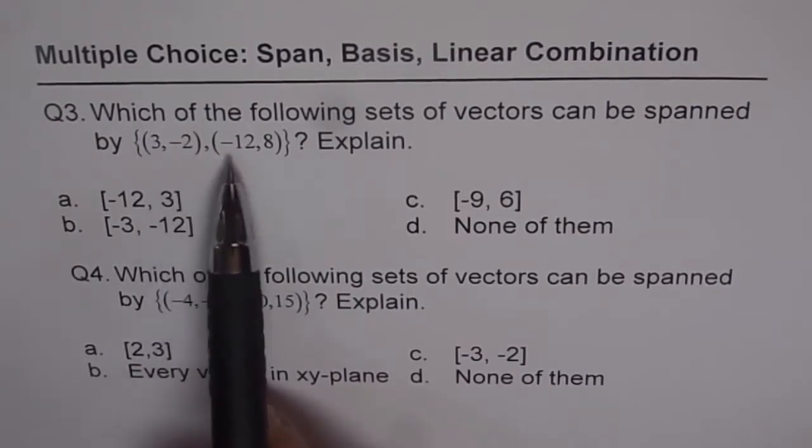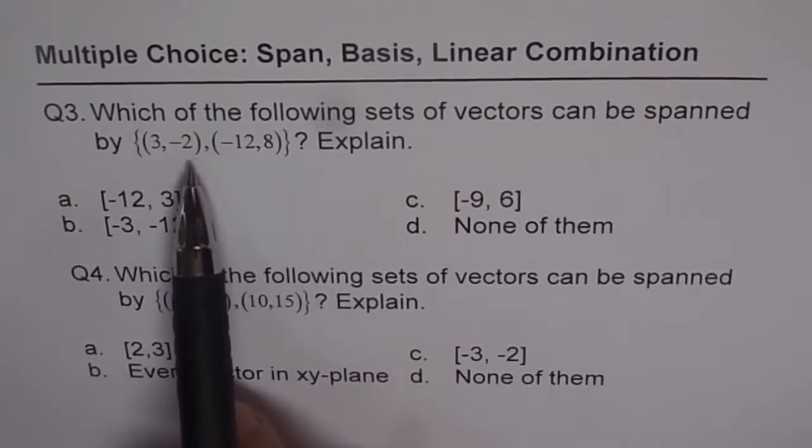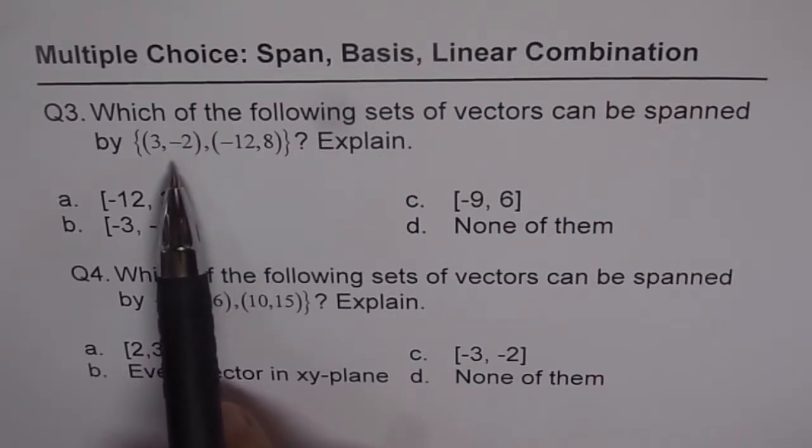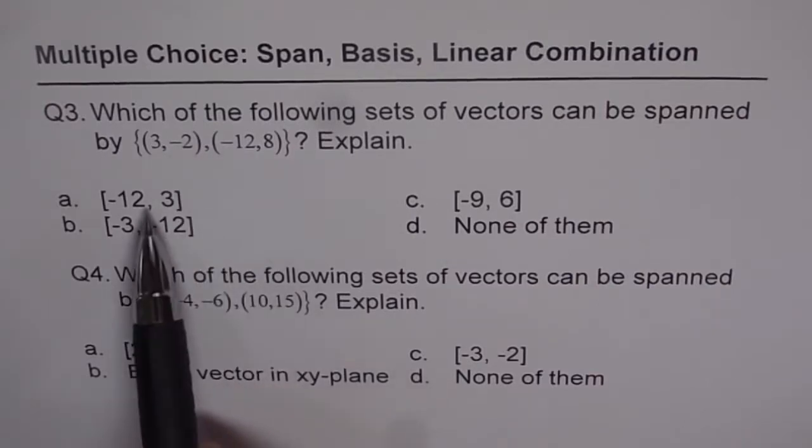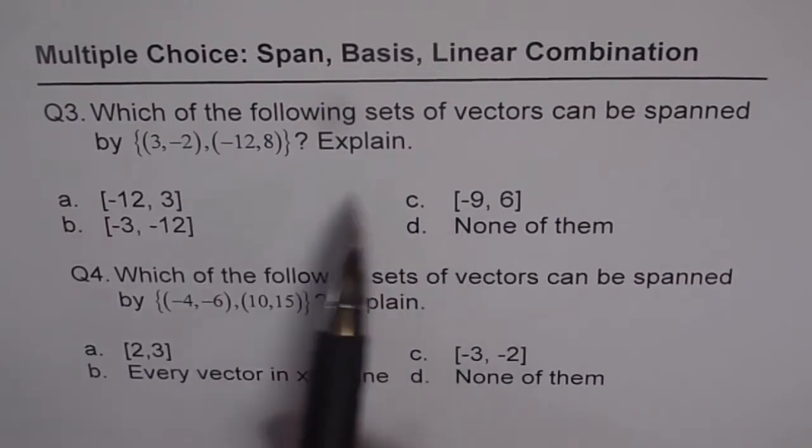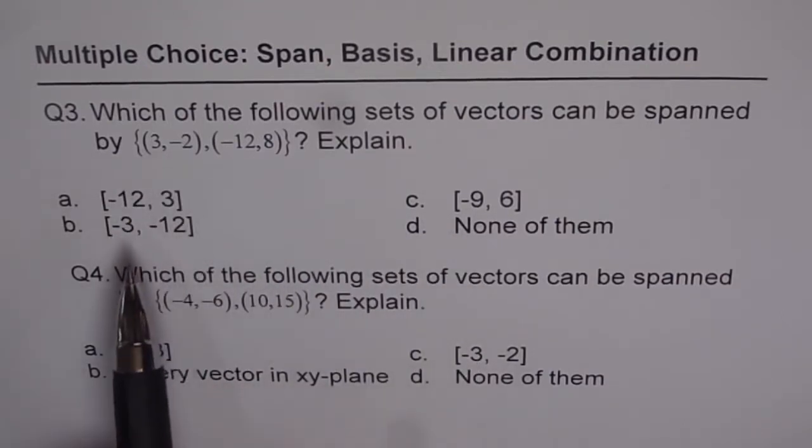Since they are scalar multiples, they cannot span everything in xy-plane, but they can definitely span collinear vectors. So if you have a collinear vector here to {3, -2}, it could be spanned. That is what you are looking for.